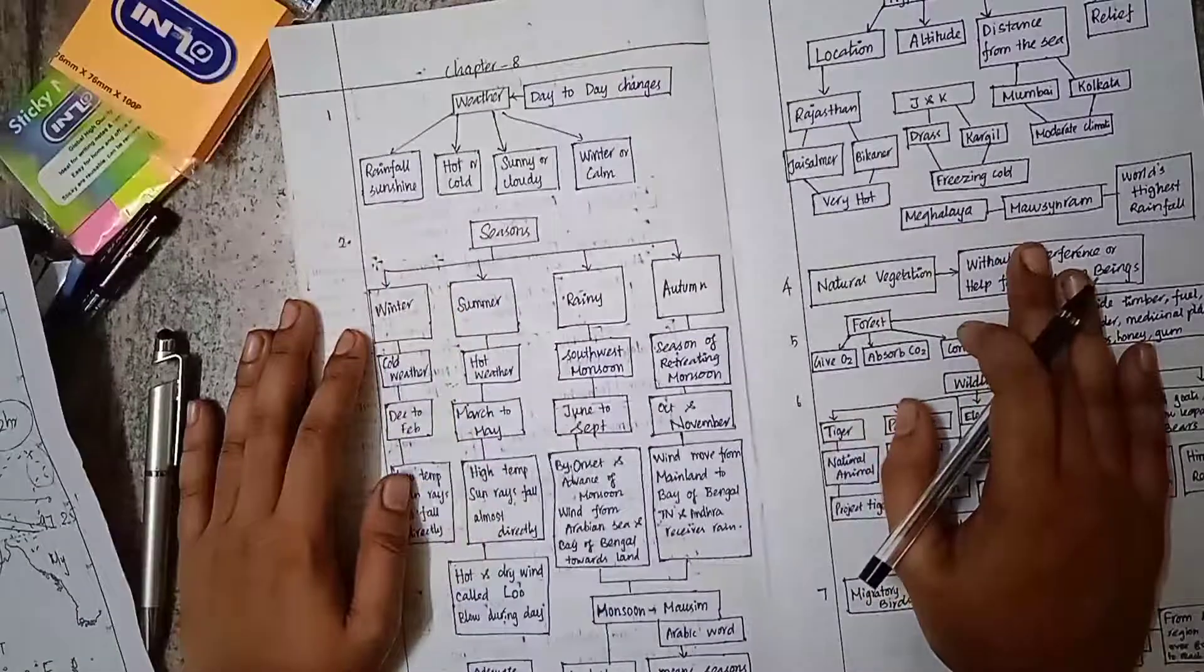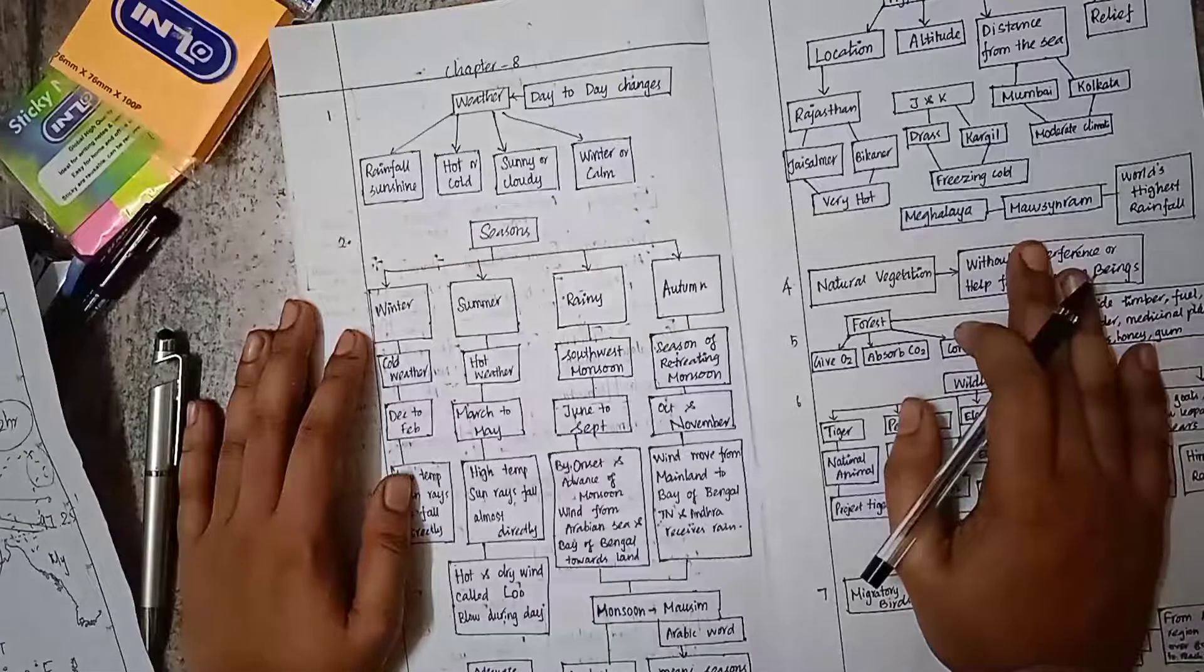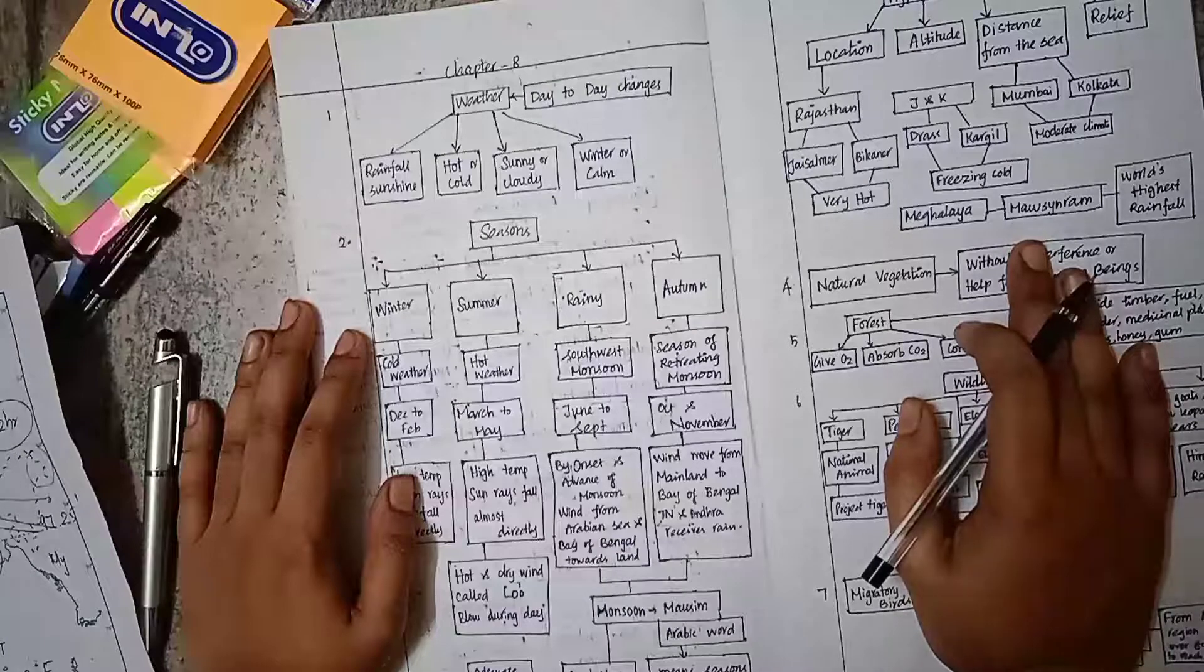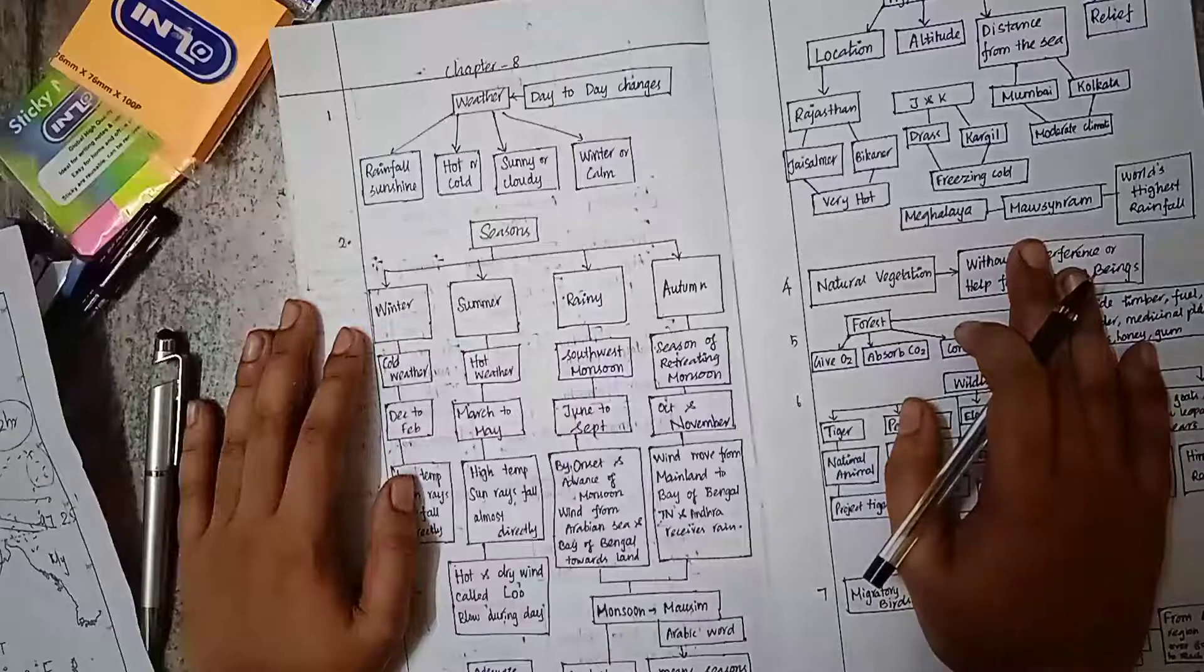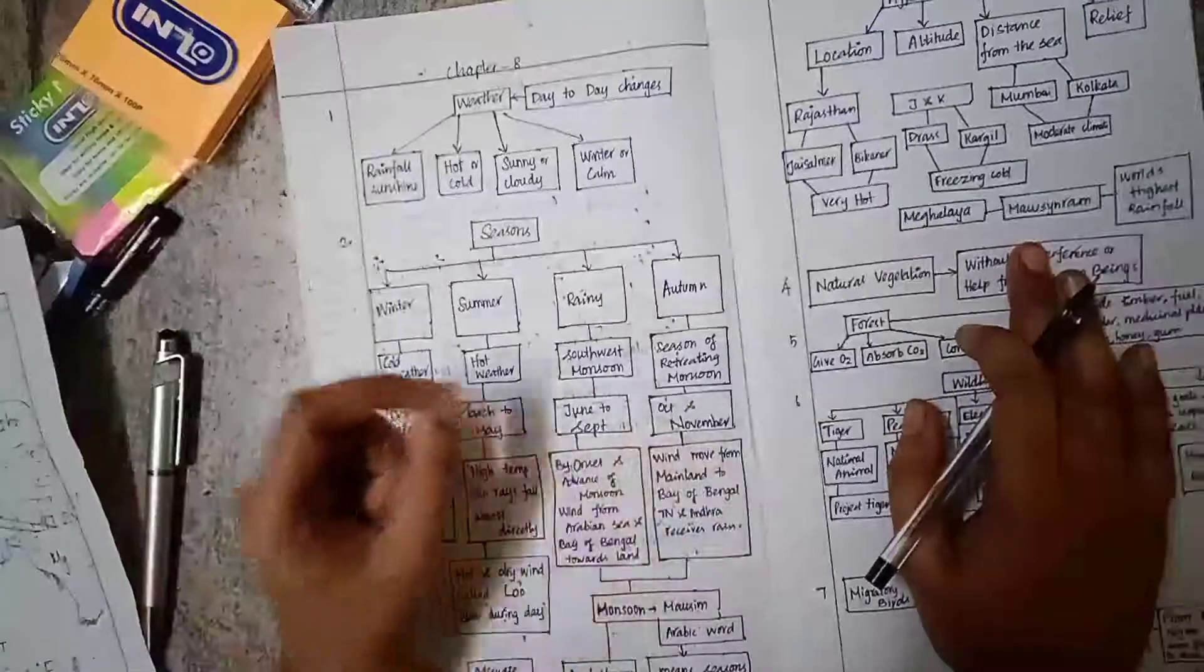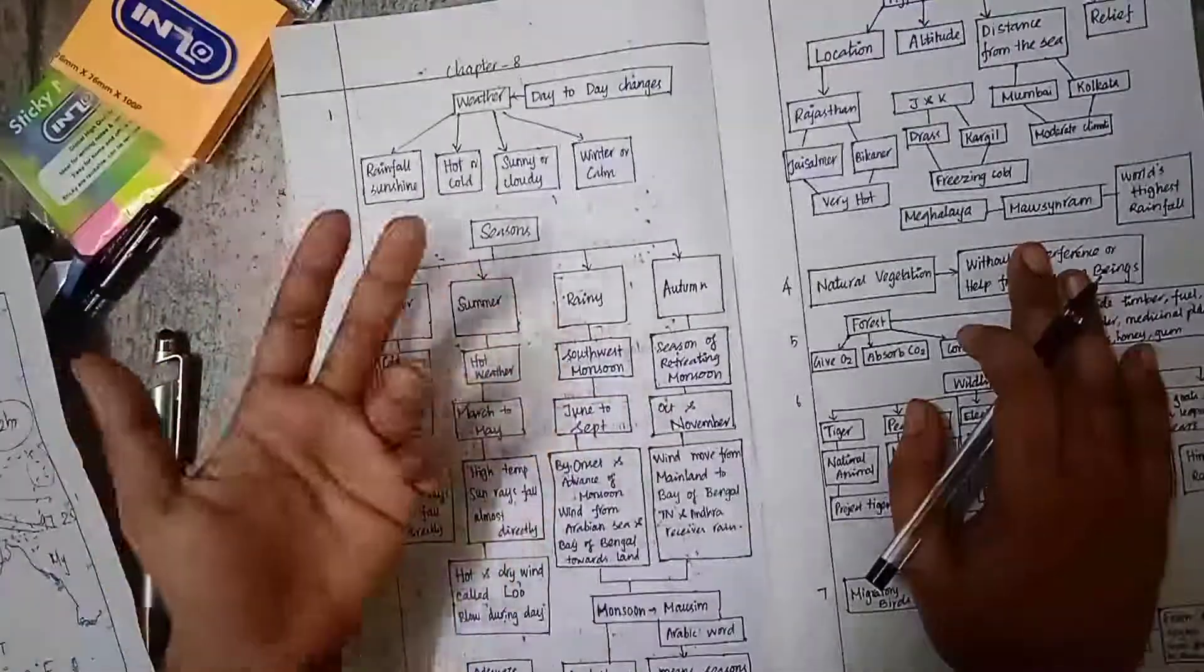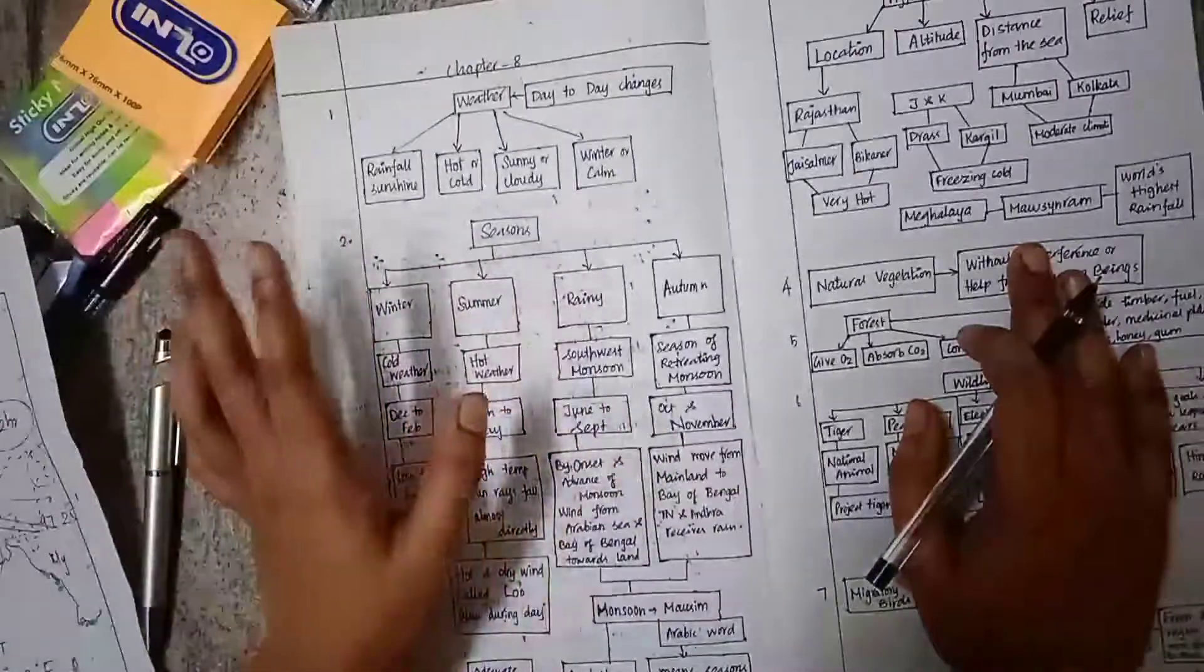In Chapter 8, we discuss weather and climate. Weather is day-to-day change. We say today the weather is hot, moderate, sunny, cloudy, or calm, based on day-to-day changes like rainfall, sunshine, hot, cold, sunny, cloudy, or winter.